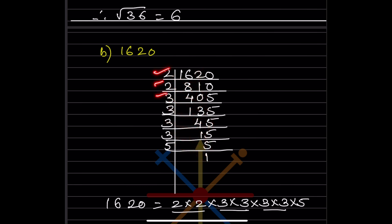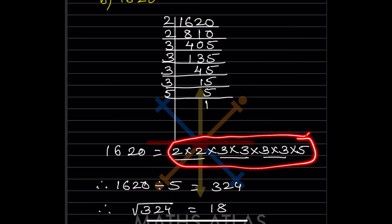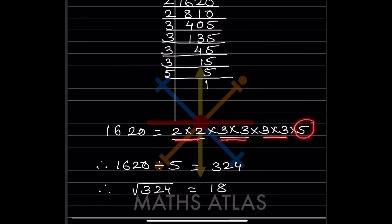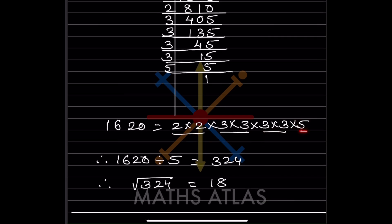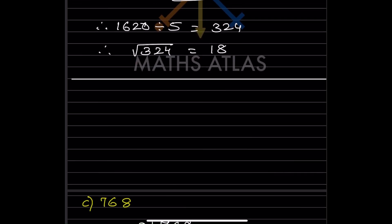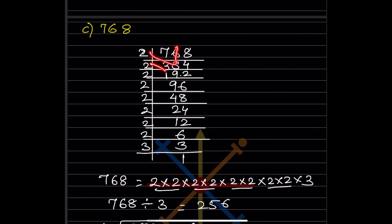Now for 1620, you find the factors. Making groups of 2, the number 5 is left alone. So we divide 1620 by 5, which gives 324. We take the square root of 324, which is 18, because 18 × 18 = 324. So 18 is the answer.